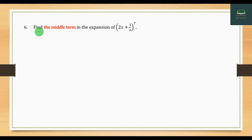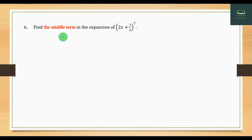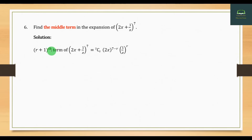Question number 6. Find the middle term in the expansion of (2x + 1)(x + 7). The middle term in the expansion — the number is 1 plus 1 of (2x + 1)(x + 7). This gives 2x plus 2x plus 7.